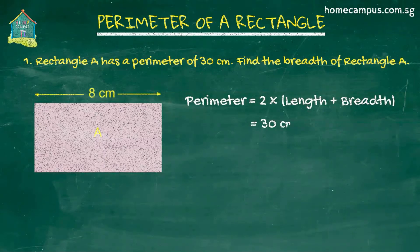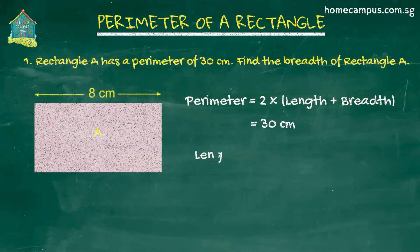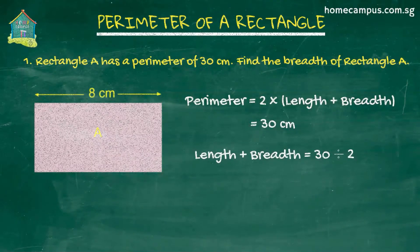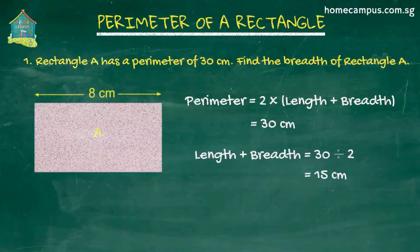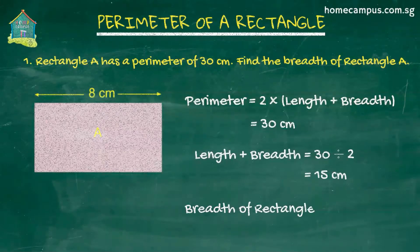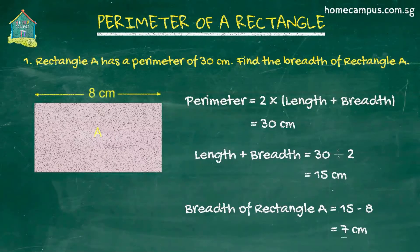Back to our example, the perimeter of rectangle A is 30 centimeters, which means that two times (length plus breadth) equals 30 centimeters, or length plus breadth equals 30 divided by 2, which is 15 centimeters. Now we know that the length of the rectangle is 8 centimeters — that's given to us. Therefore the breadth will be 15 minus 8, or 7 centimeters. That's how you solve this problem.